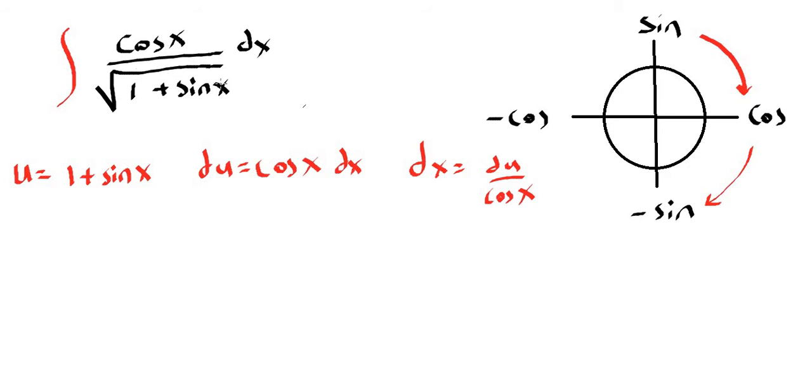Now let's write everything in terms of u. So we have cosine x on top and instead of 1 plus sine of x we have u and instead of dx here we have du over cosine x. So cosines cancel out. So that's the beauty of sine and cosine together.